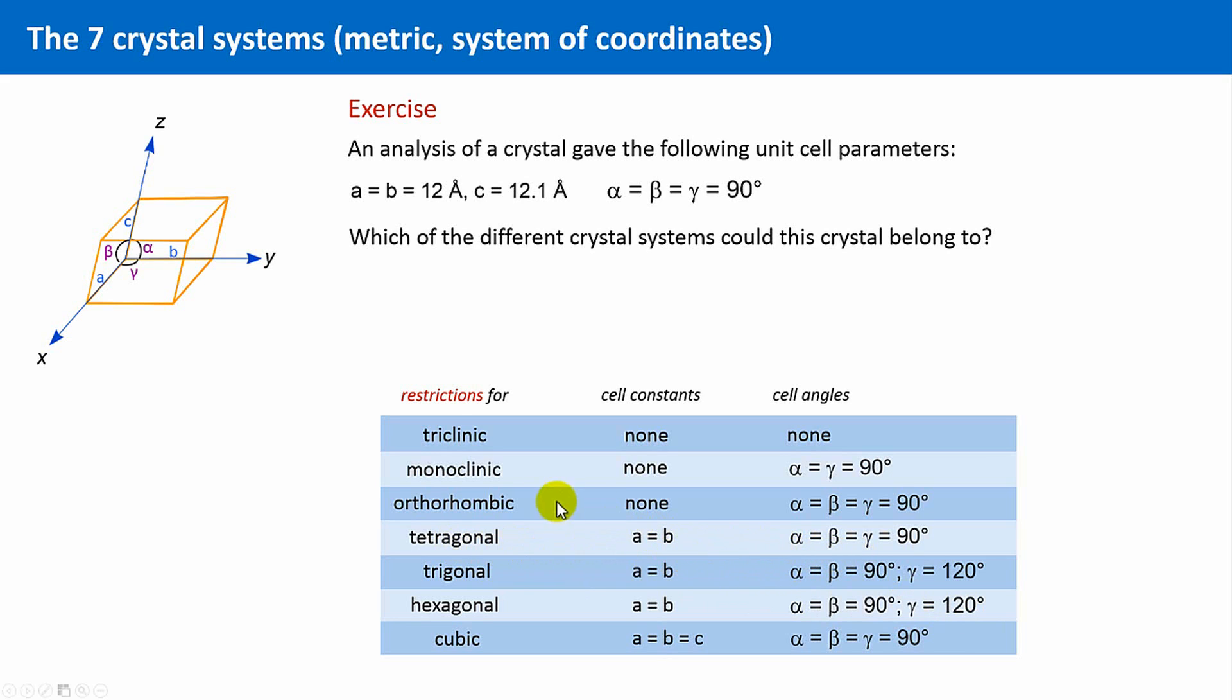Going on to the orthorhombic crystal system? Well, that fits too. If none of the cell constants are fixed or determined, then they could also have the dimensions of our crystal. The angles should obey 90 degrees, and this fits perfectly well.